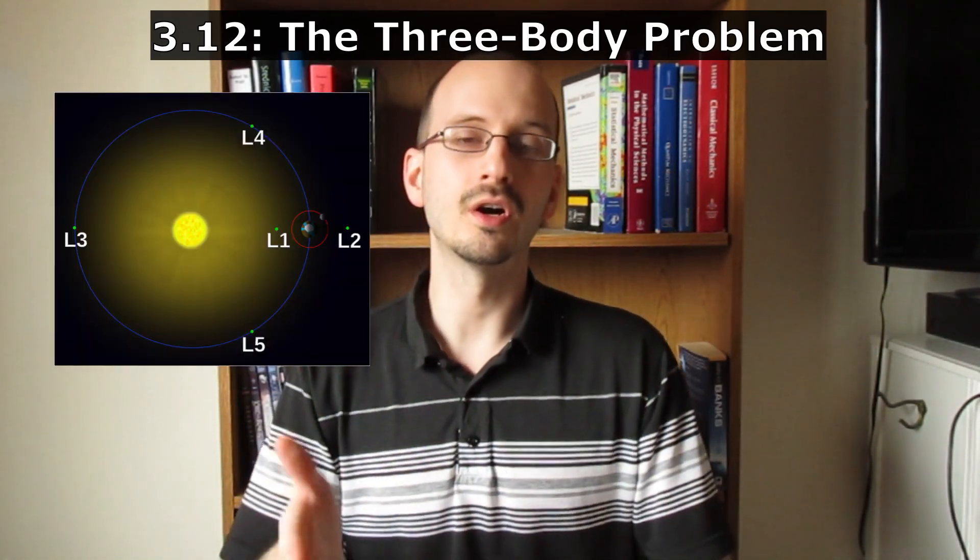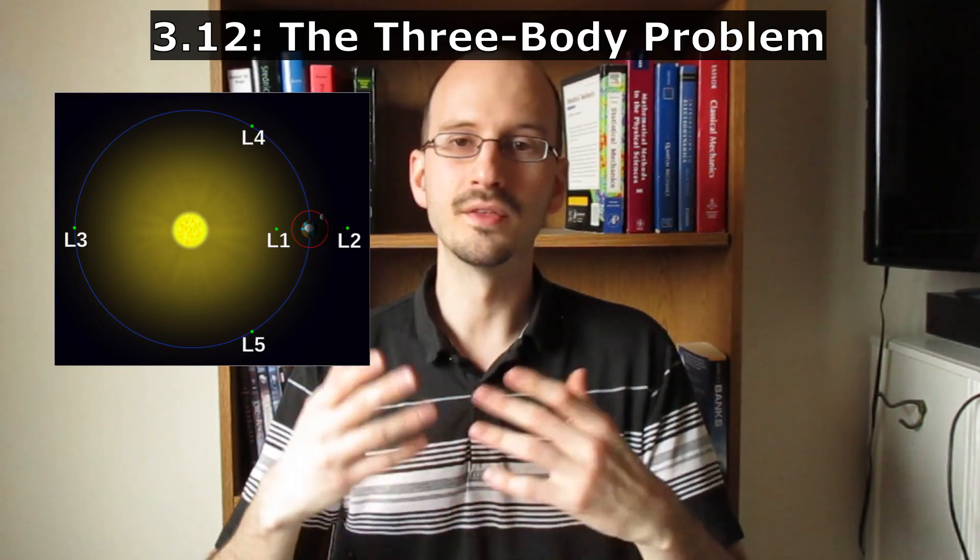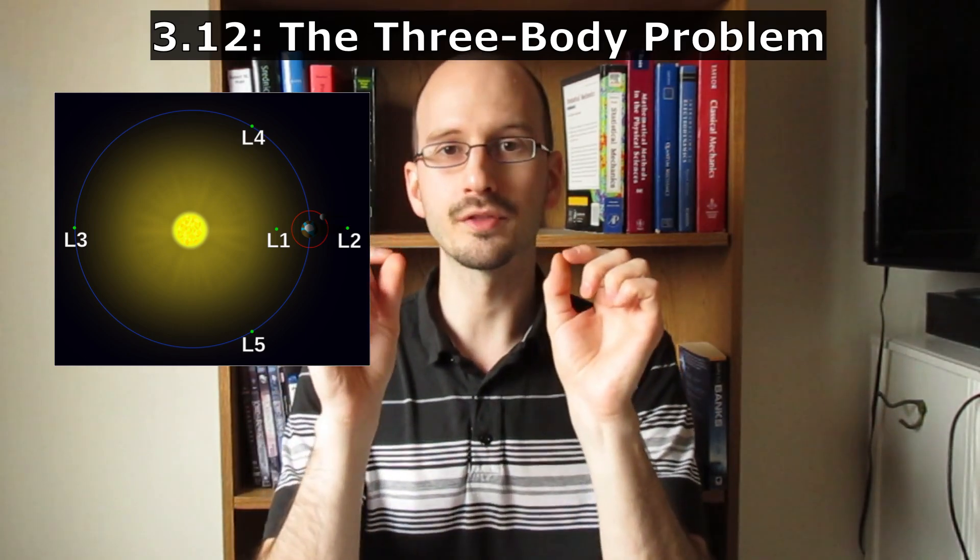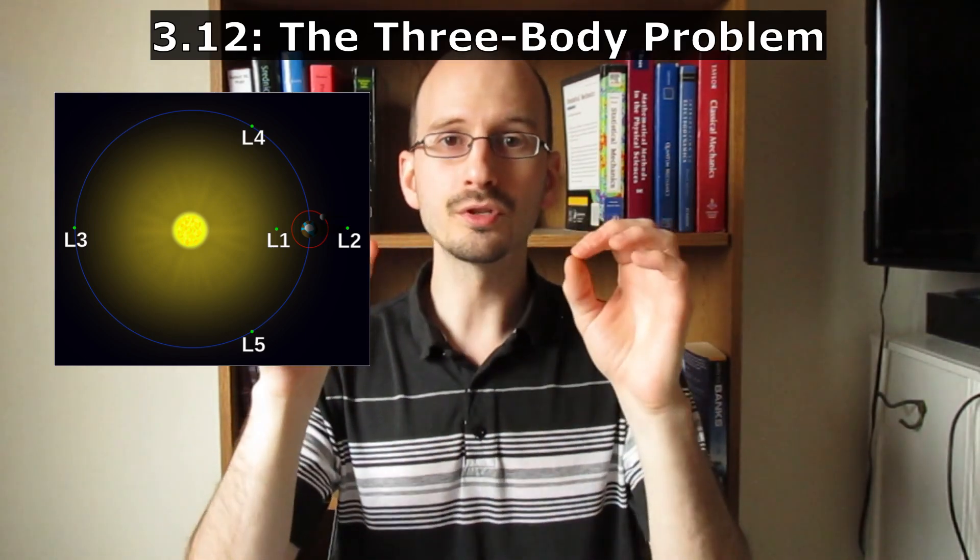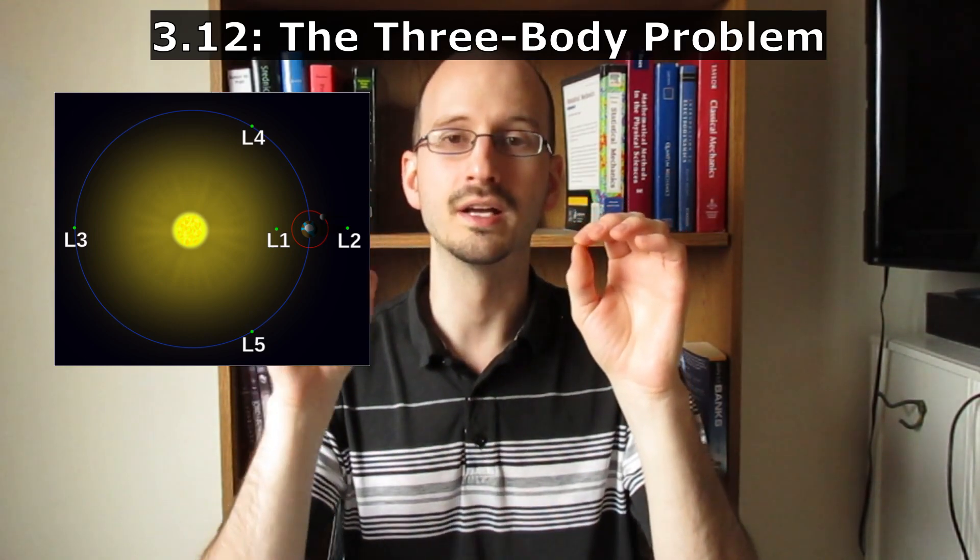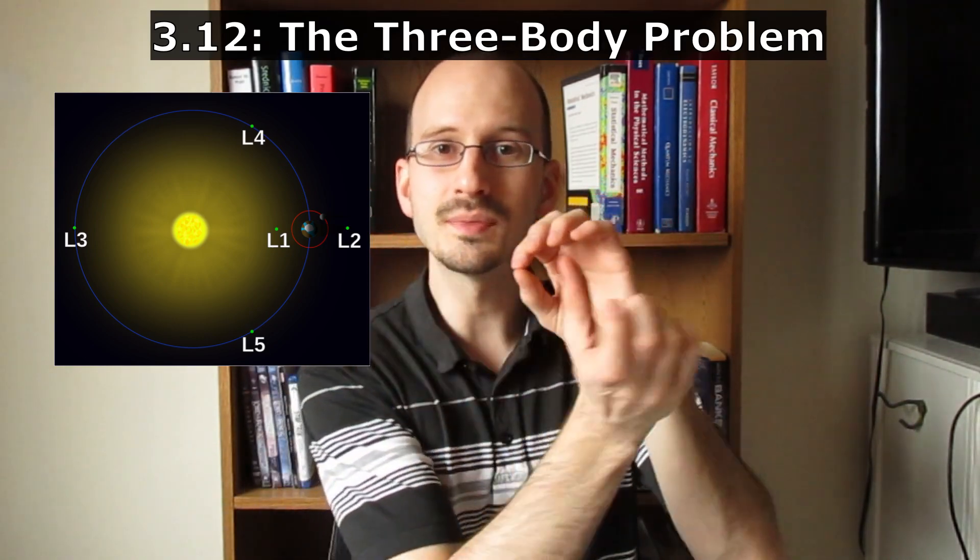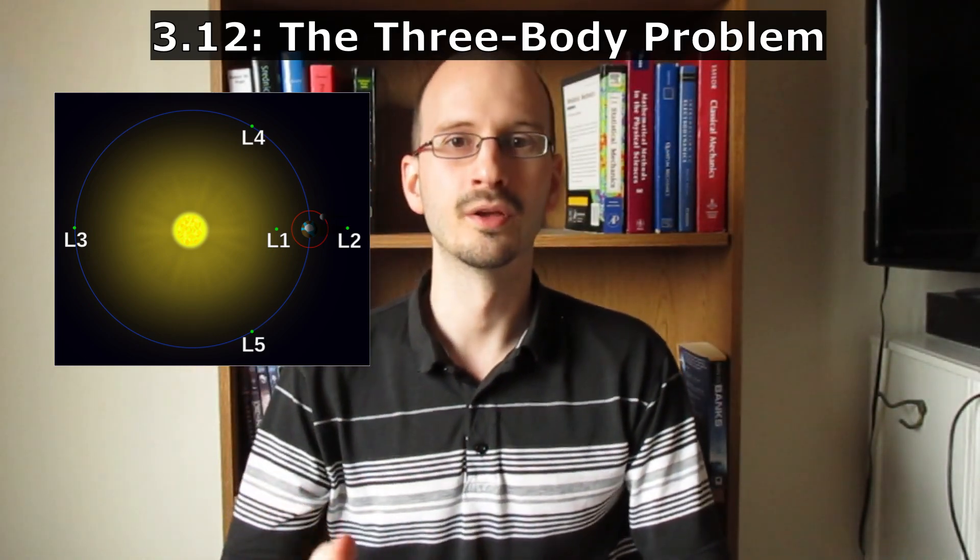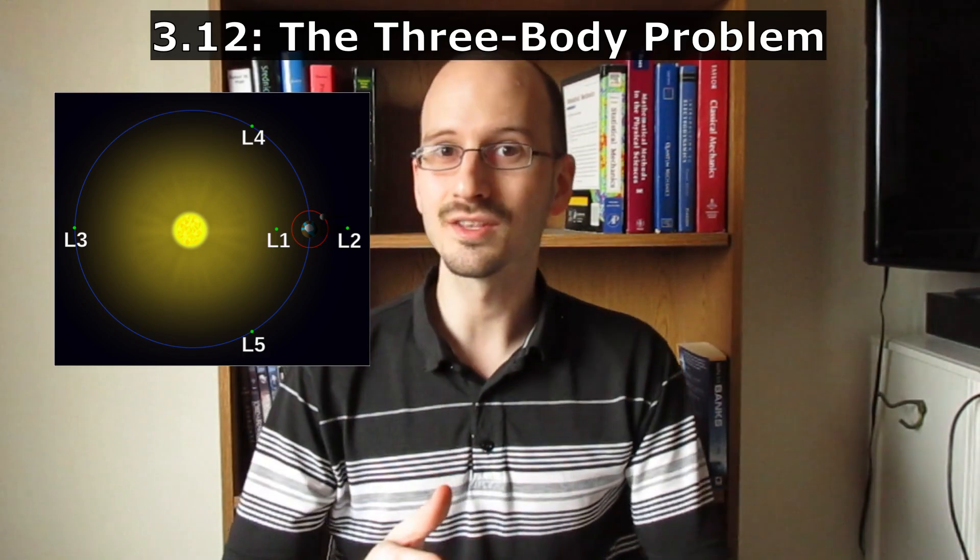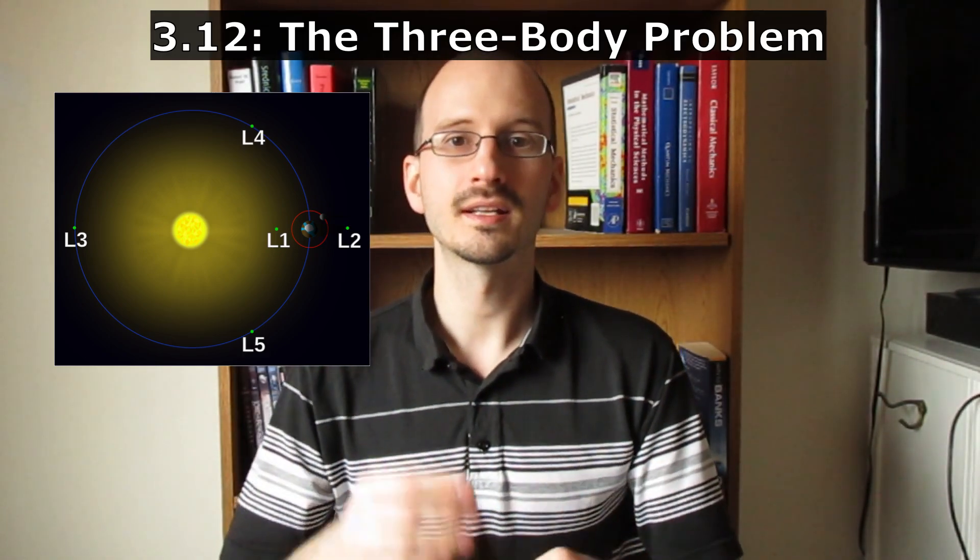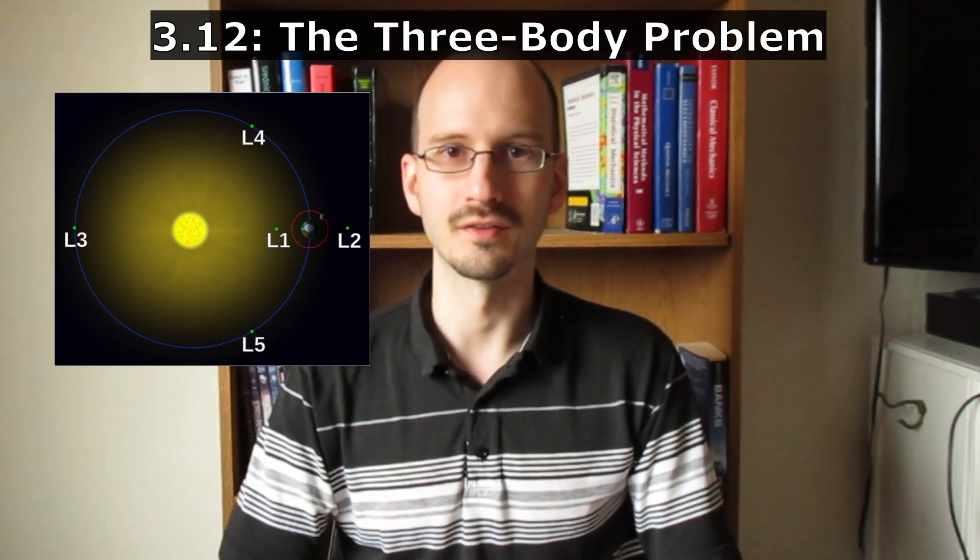These points are called Lagrange points, and they're given the labels L1 through L5. L1 is partway between the earth and the sun. This is where the earth pulls on the satellite, canceling out enough of the sun's pull on the satellite so that it orbits with the same speed as the earth. L2 is on the dark side of the earth, where the earth's gravity adds to the sun's gravity to increase the speed of the orbit, keeping the object on the dark side of the earth.